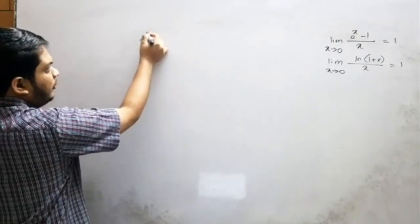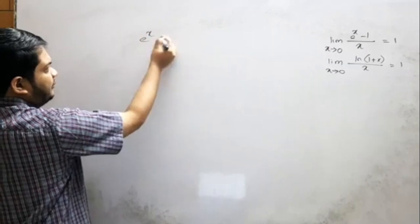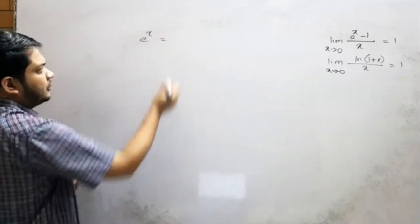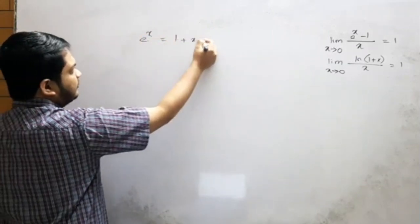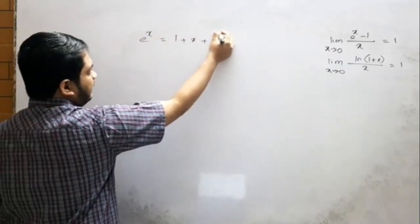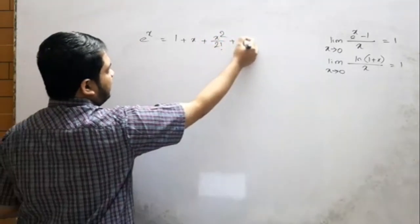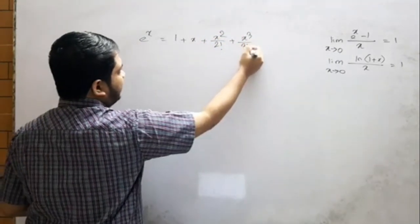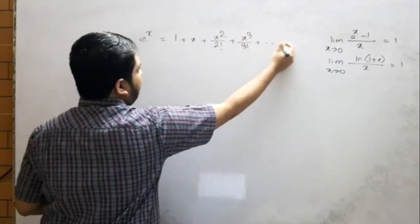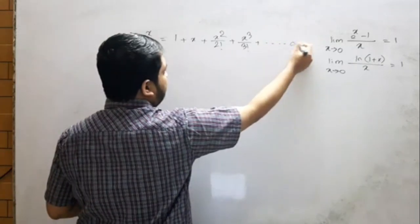e to the power x equals 1 plus x plus x squared by 2 factorial, plus x cubed by 3 factorial, and so on to infinity.